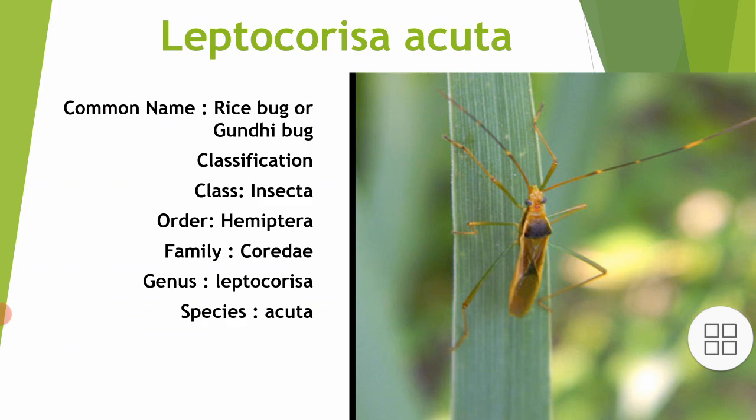Classification: It belongs to class Insecta, order Hemiptera, family Coreidae, genus Leptocorisa, species acuuta.